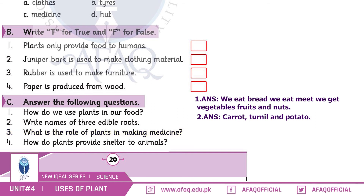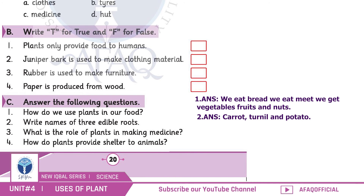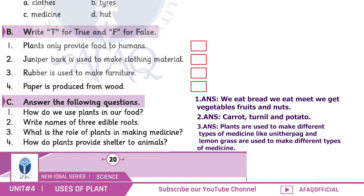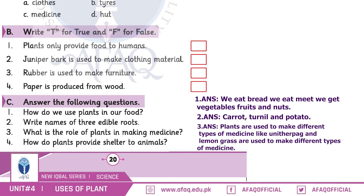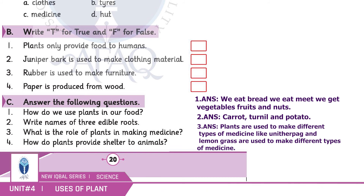Plants are used to make different types of medicines. Juniper bark and lemongrass are used to make different types of medicines. Very good!